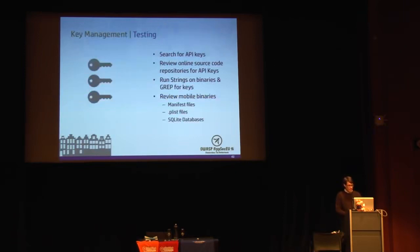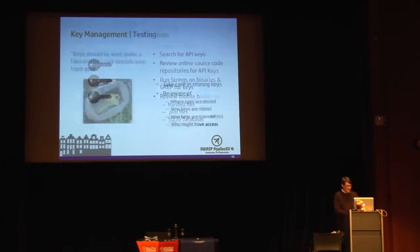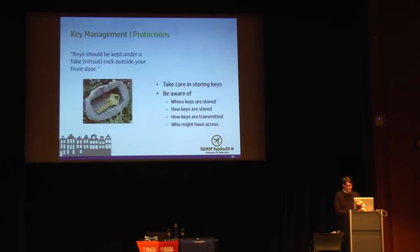When testing APIs and various mobile applications, search for API keys. With mobile applications, look for them in the binary — run strings against your binary to look for sensitive information, and look in your manifest and PList files. Also review your online source code repositories and make sure you're not accidentally posting sensitive information in a public space. Take care in storing your keys — know where they're stored, how they're stored, how they're transmitted, and who might have access to them.